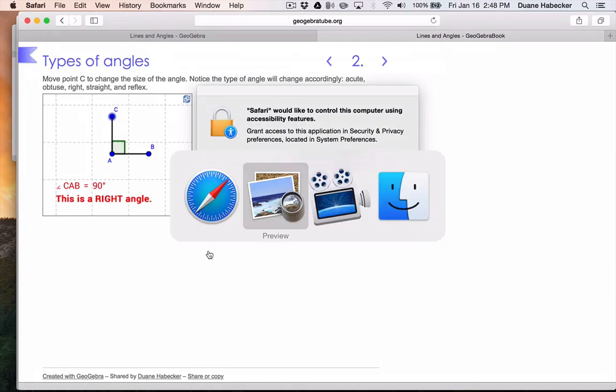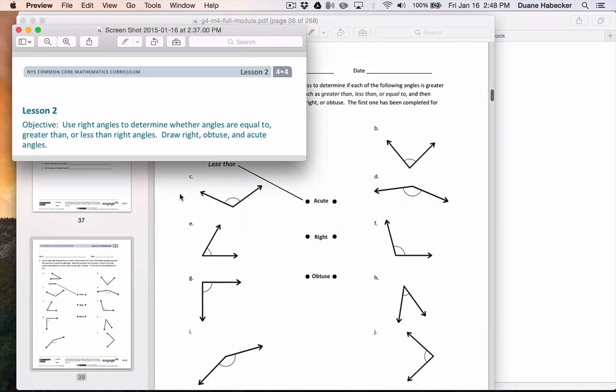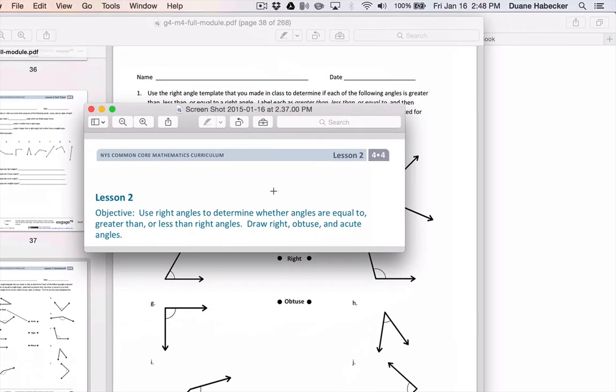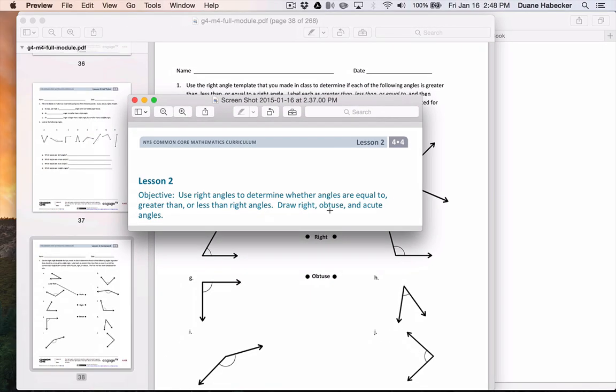That is Grade 4 Module 4 Lesson 2, where we're learning about right angle, obtuse angle, and acute angle.